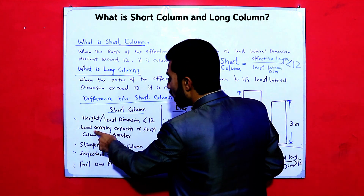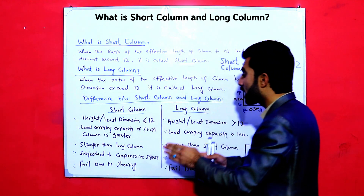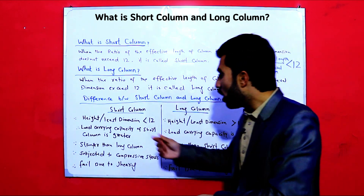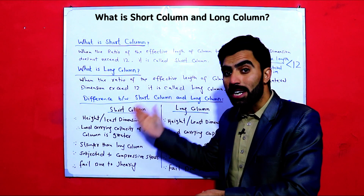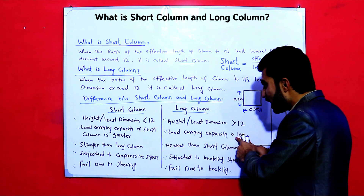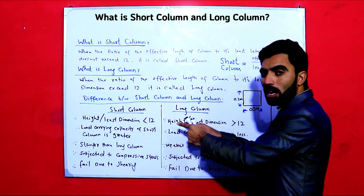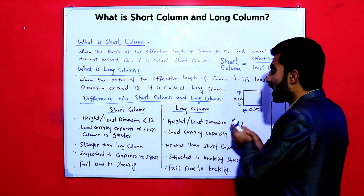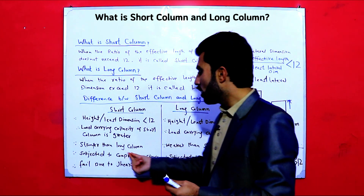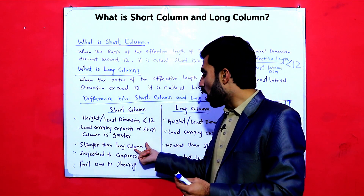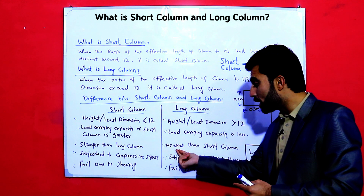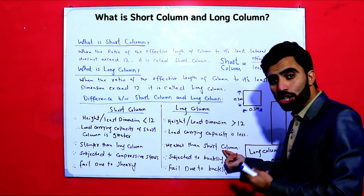The second difference is load-carrying capacity. The load-carrying capacity of a short column is greater compared to a long column — short columns carry more load. The third difference is strength: short columns are stronger compared to long columns, and long columns are weaker than short columns. So overall, short columns are better in terms of strength.